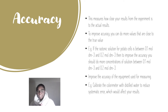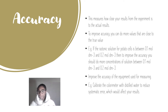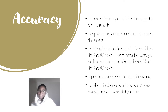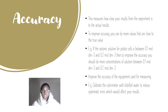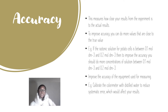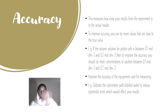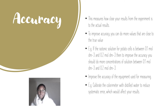Another way to improve accuracy is to use more precise measuring equipment. You can also calibrate your measuring equipment, which would reduce systematic error — because systematic error would affect your results. For example, calibrate the colorimeter. I'll cover what a colorimeter is in another video, so stay tuned.